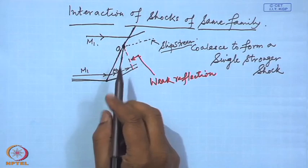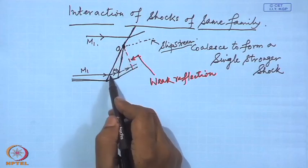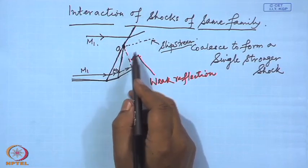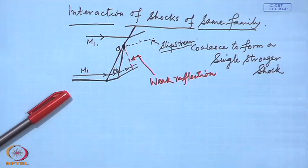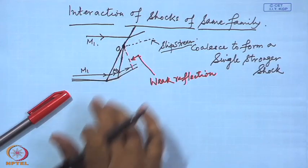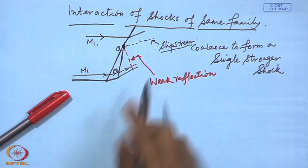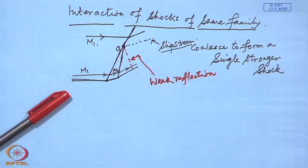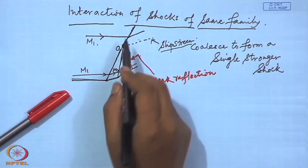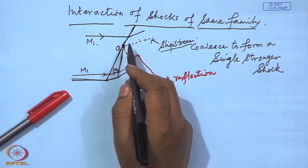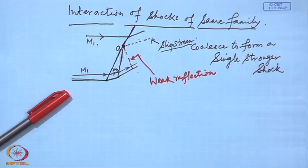Usually, if the second shock is much weaker than the first one, then this reflection is a compression wave. However, if their strengths are comparable, it might be an expansion wave as well. So, one can say that this part of the second shock is merging with the first shock, and a small part is reflected back towards the wall.